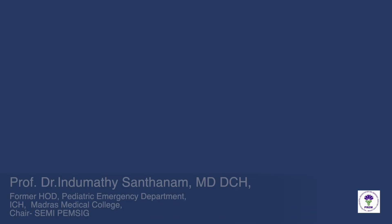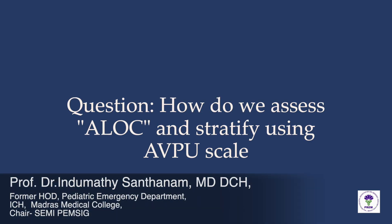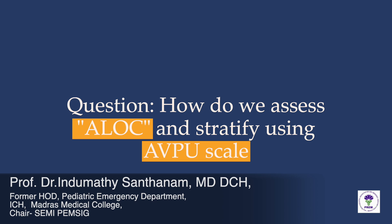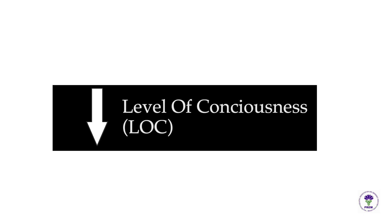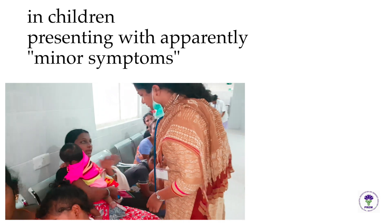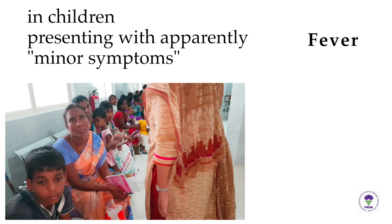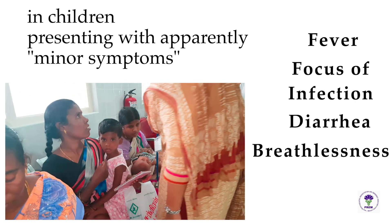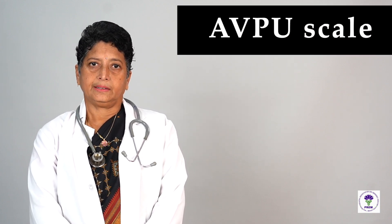In this video, let us discuss how to identify the severity of an acute drop in the level of consciousness and stratify using the AVPU scale in OPD or emergency settings. An acute drop in the level of consciousness can occur due to early cerebral hypoxia or hypoperfusion in children presenting with apparently minor symptoms such as fever, focus of infection, diarrhea, or breathlessness. Since the Glasgow Coma Scale, which is widely used in ICU settings, cannot be used in the outpatient department or emergency room, the AVPU scale is employed to score the drop in the level of consciousness.